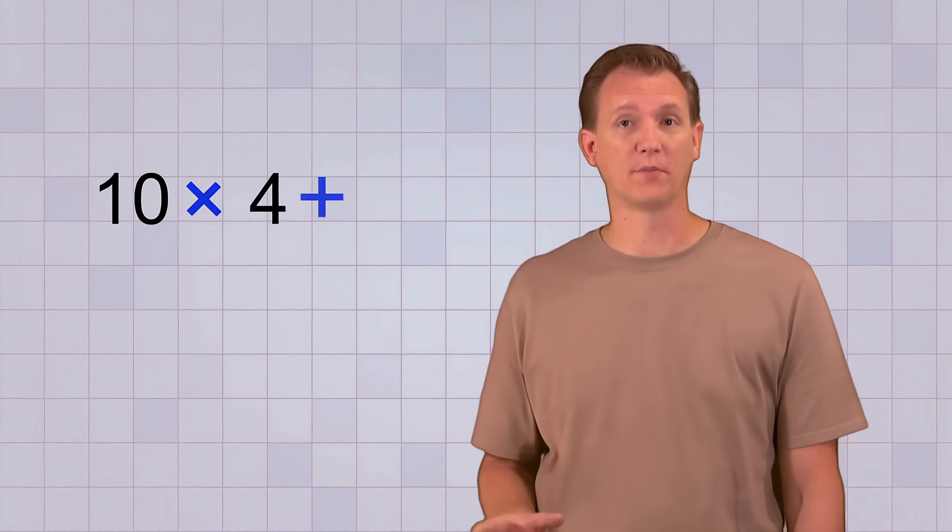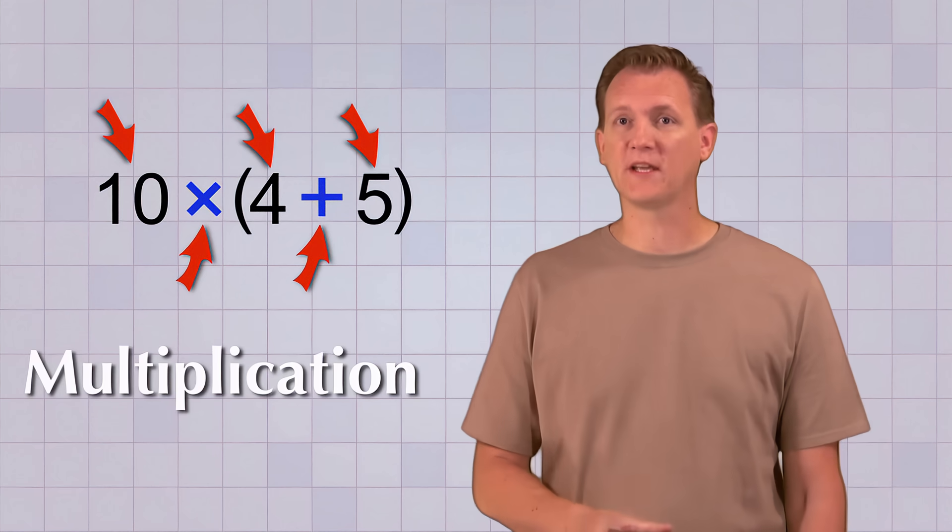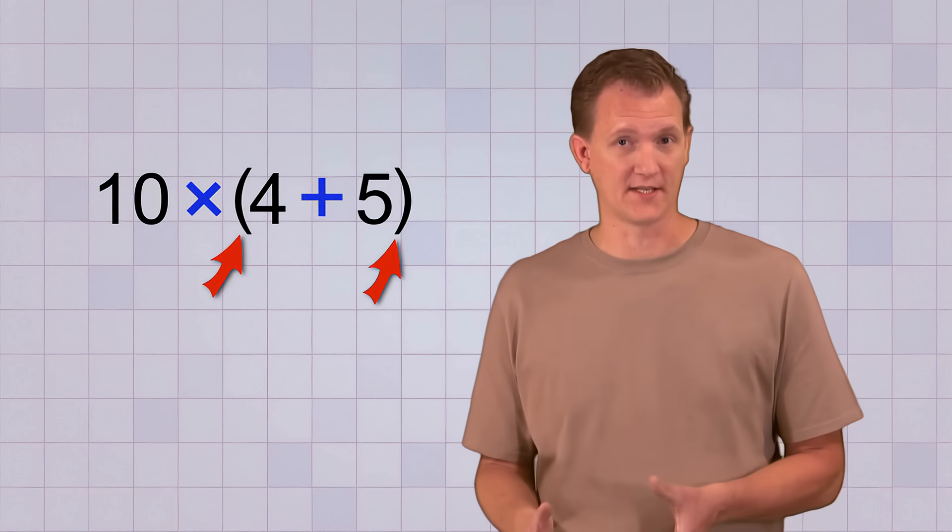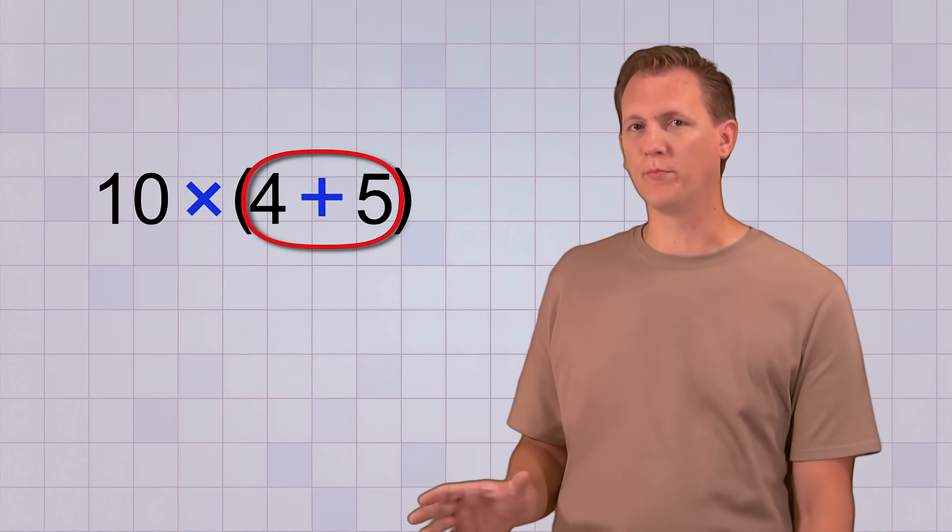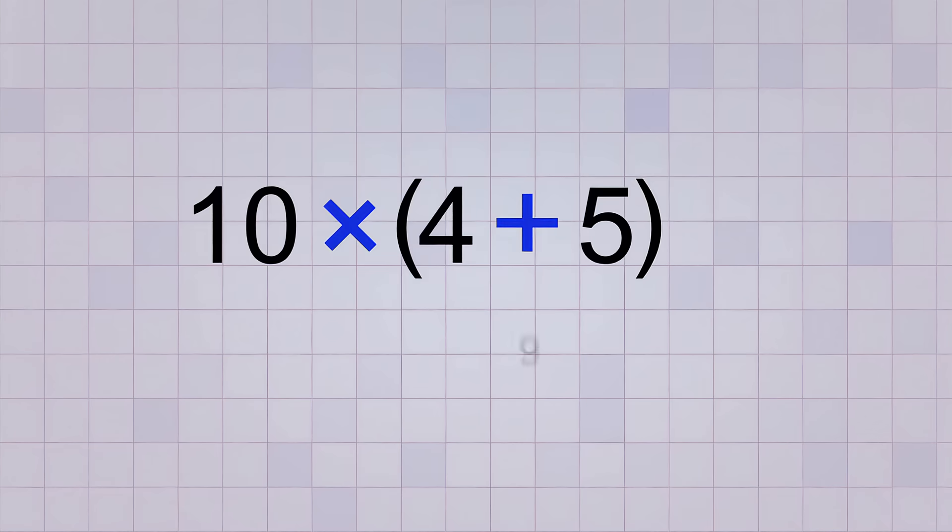For example, have a look at this problem. It has three numbers and two operations, multiplication and addition. But two of the numbers and the addition symbol are inside parentheses. That means that they form a group, and we need to do that part of the problem first. 4 plus 5 equals 9. So the part inside the parentheses can just be replaced with the simplified value 9.